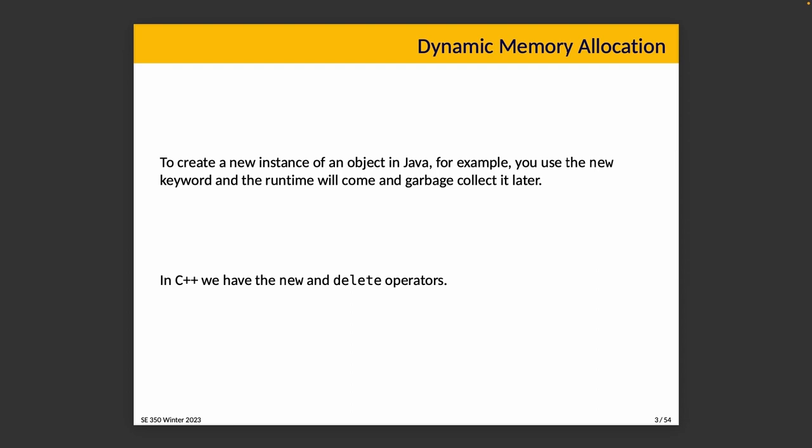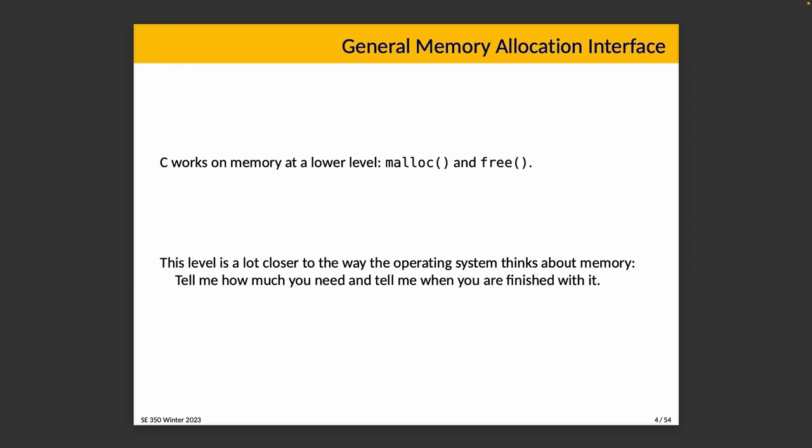In C++, we have the new and the delete operators to allocate and deallocate memory. These invoke a constructor and destructor, respectively, and we are responsible for choosing when to deallocate the memory ourselves — there is no runtime system that's going to do it for us. But in C, when we want some memory, we just allocate it with malloc and deallocate it with free.